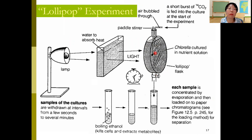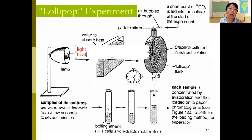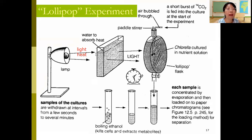For the photosynthesis experiment, you need light, so there is a light source from a lamp. However, the lamp also emits heat besides light, and we only want the light because the temperature must be kept constant. So the light is passed through a thin flask containing water to absorb the heat, and only light passes through to the lollipop flask.